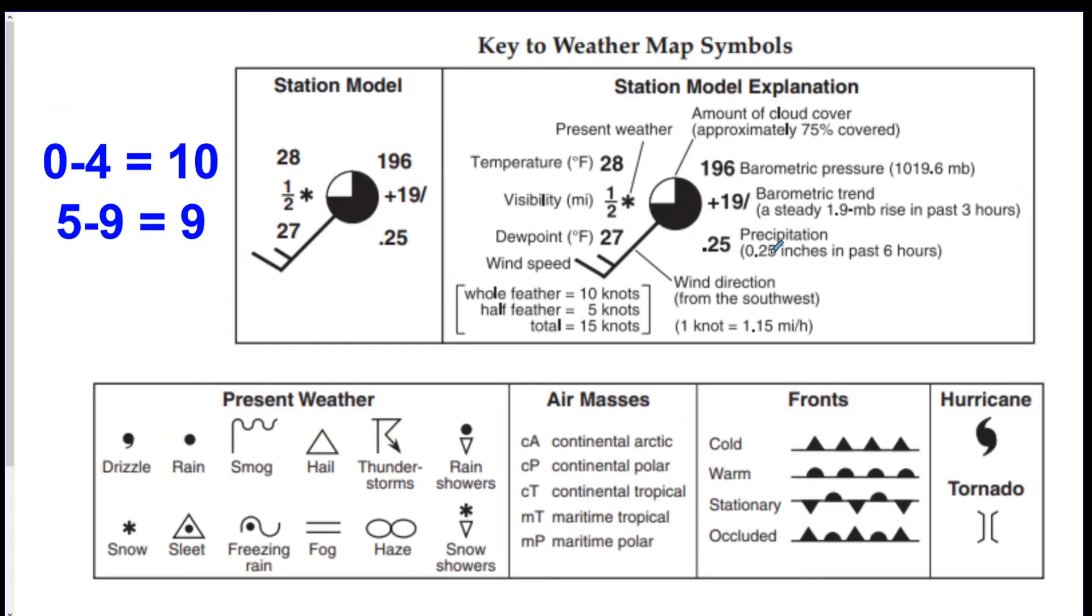So the next thing is station models. So on your reference table, page 13, you're going to have these two diagrams. Now for this video, we're not going to be focusing on air masses or fronts today. You just need to worry about the present weather, maybe the hurricane and tornado symbol, and the actual station model.